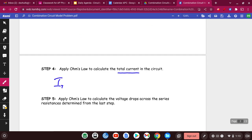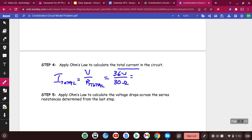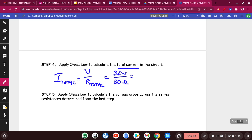So my I total is going to be equal to my voltage divided by my resistance total. And so that's going to be 36 volts over 30 ohms. So I got 36 divided by 30. That's 1.2 amps.